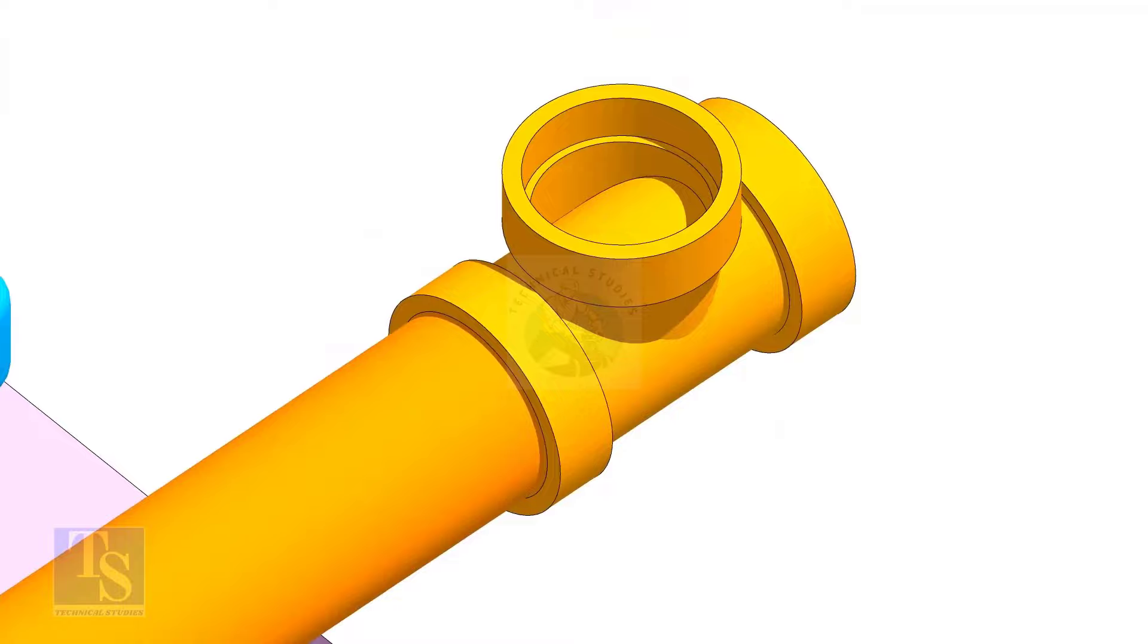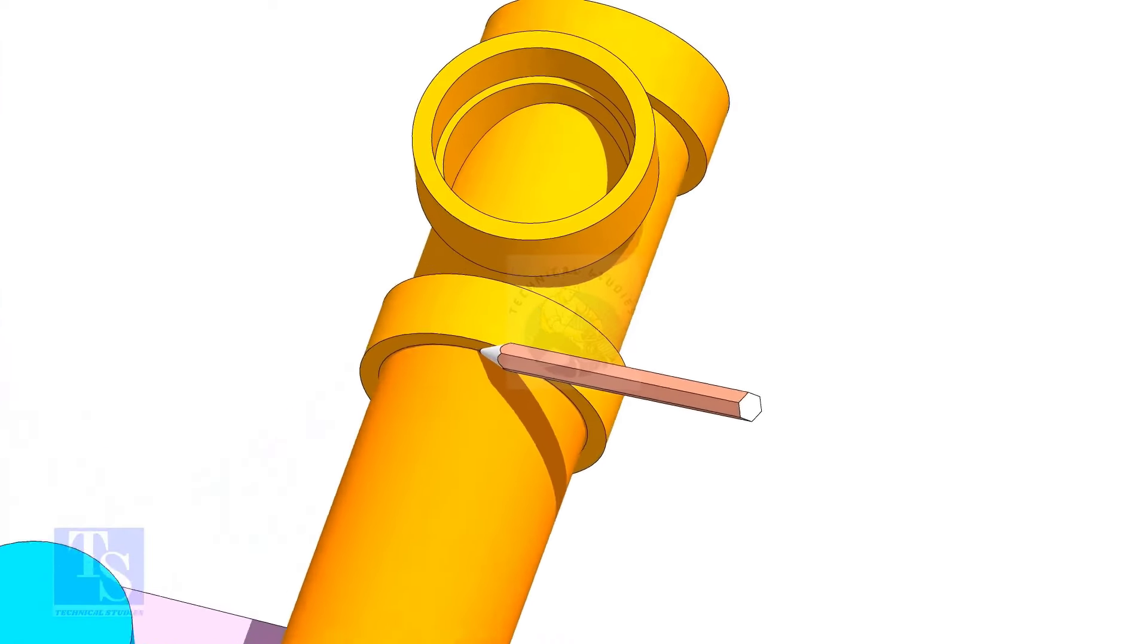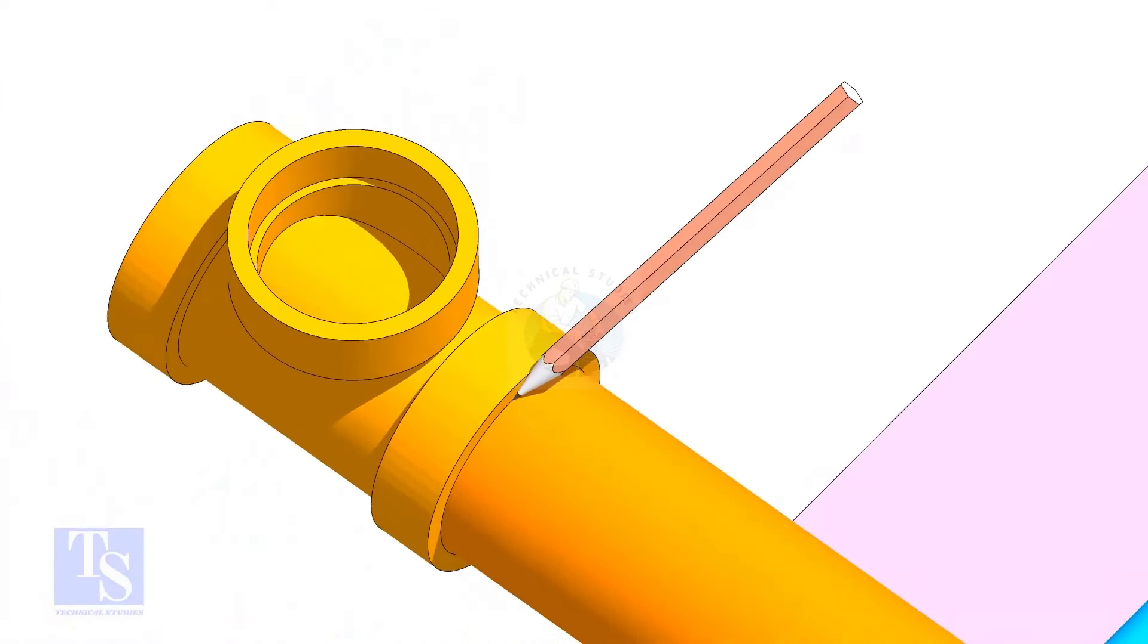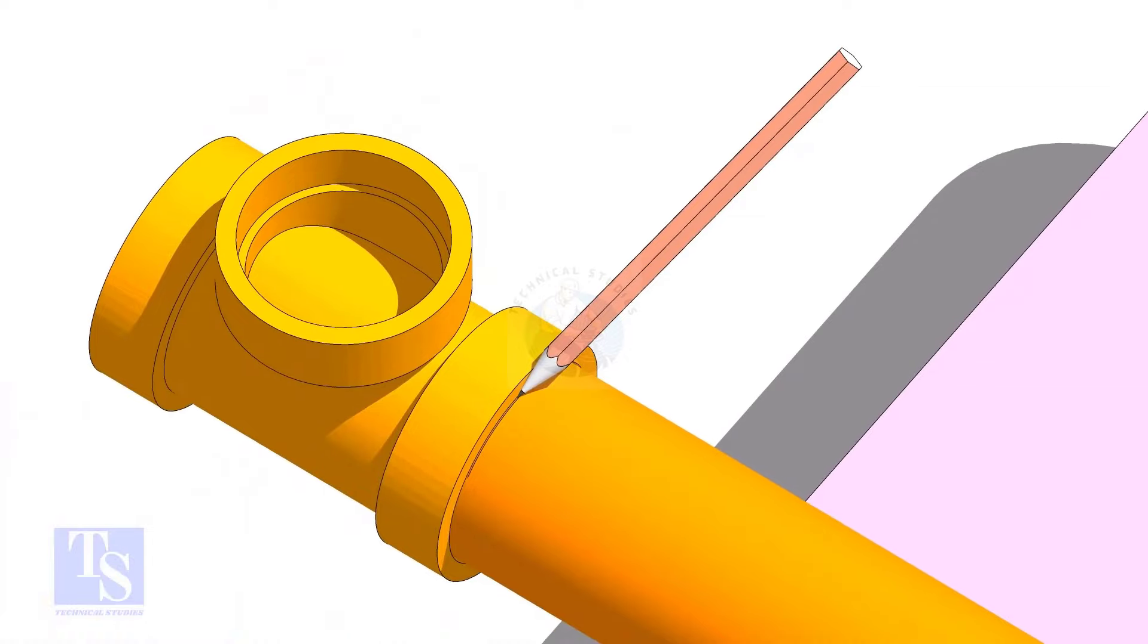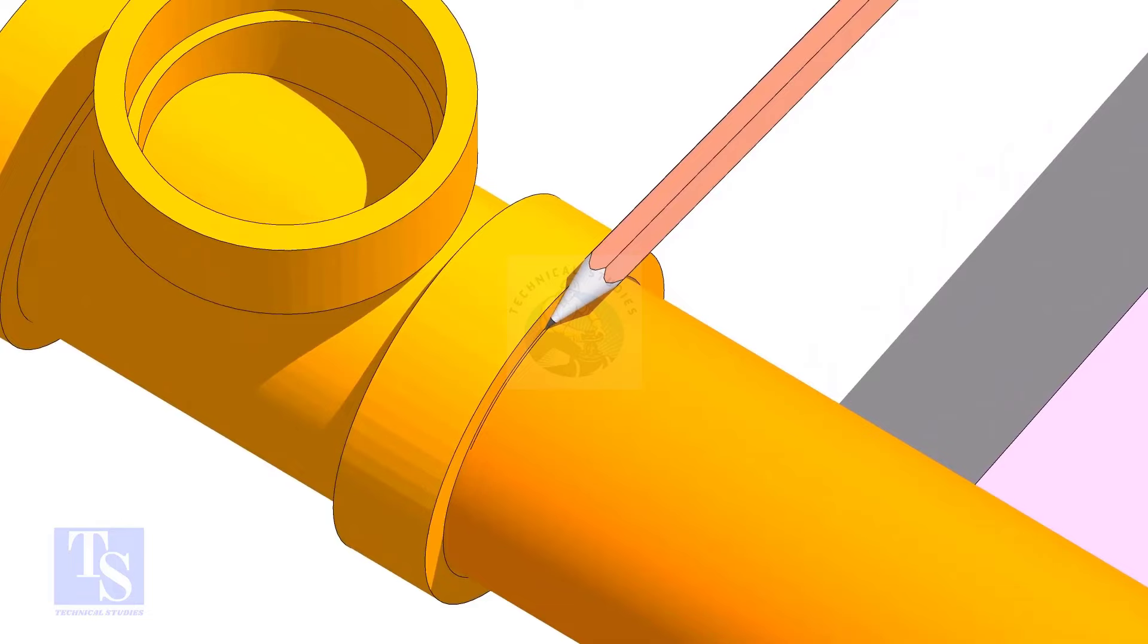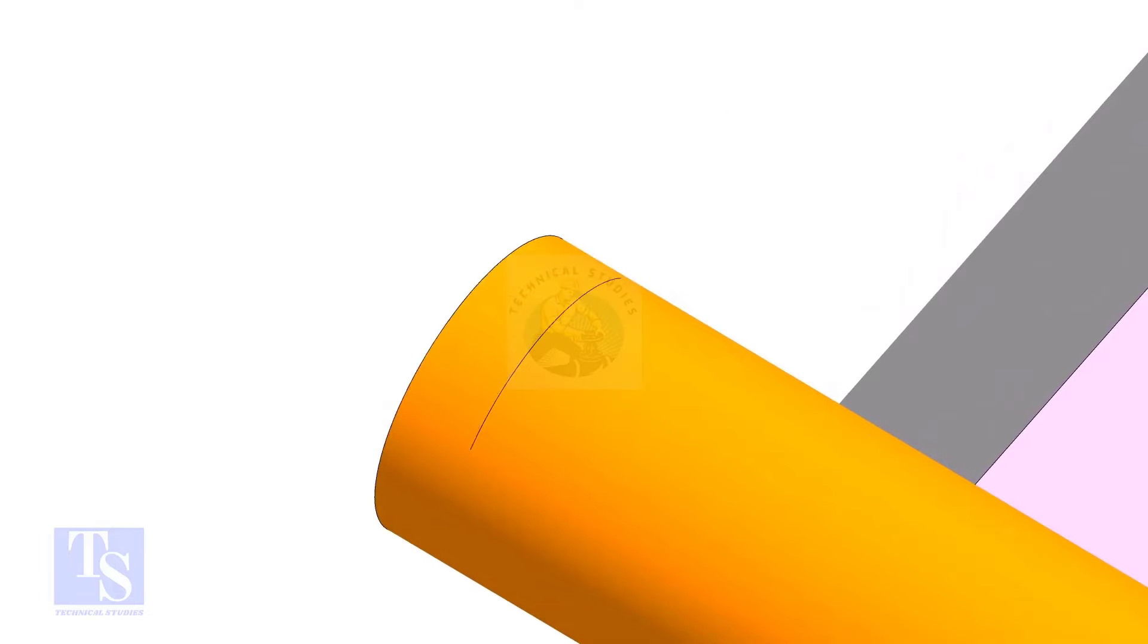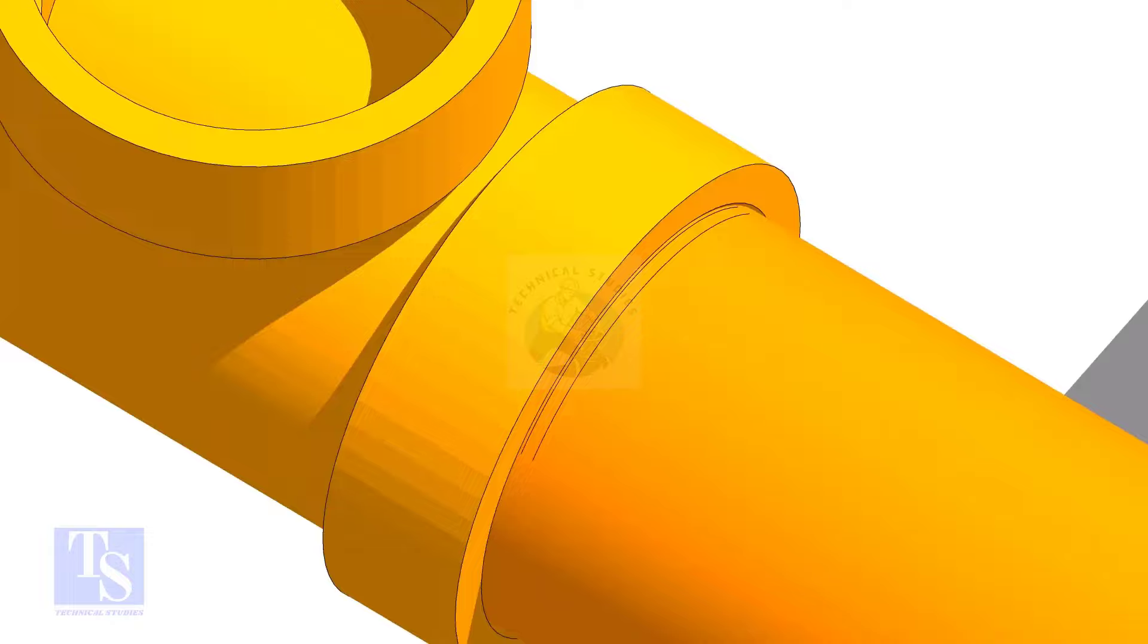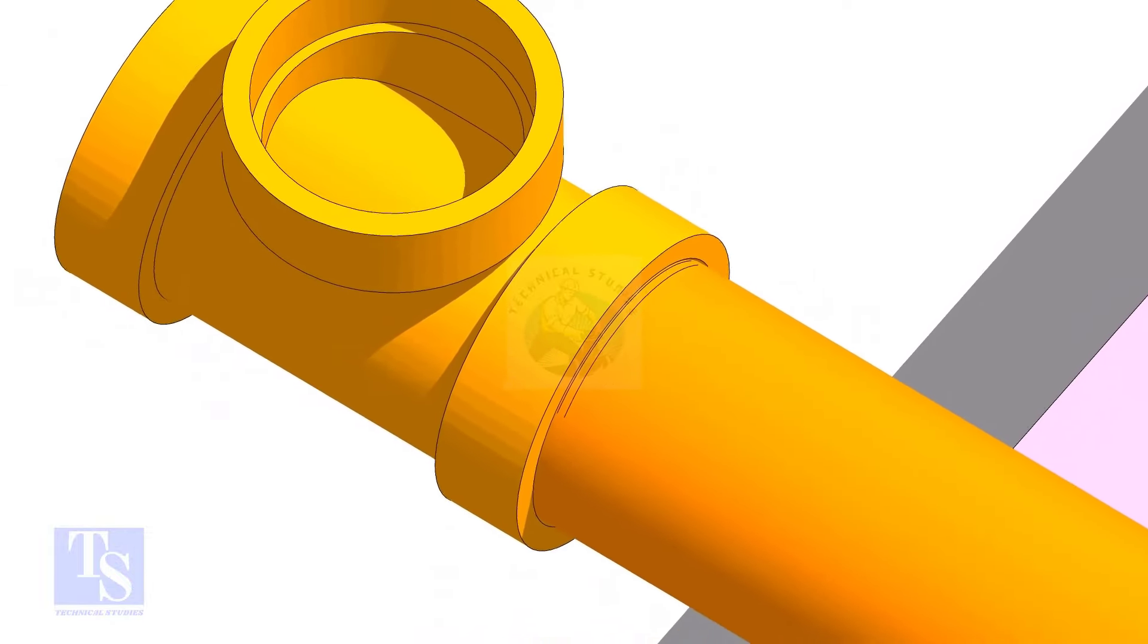Hold the T firmly and straight, and mark a line on the pipe as shown. Now, move the T away, and mark another line approximately 1.5mm away from the first line.